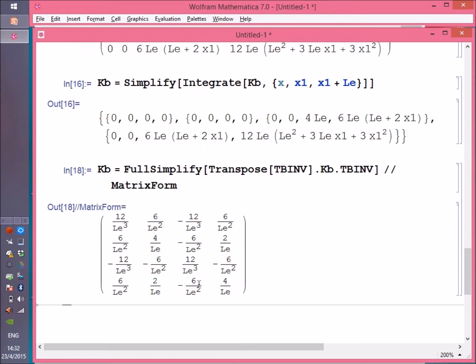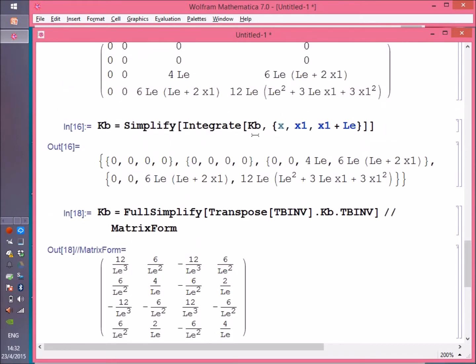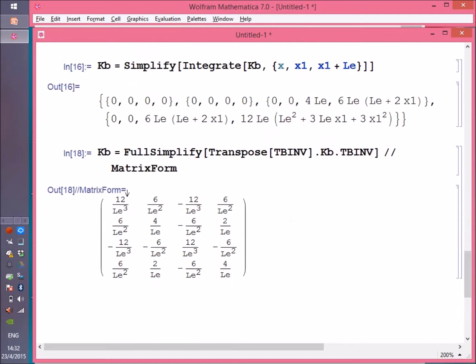So all I need to do is add an EI outside this matrix. If it's a constant, of course—if it's not constant, then it should have been included in the integration at this step. And you can see I'm having here all the terms, the 4x4 matrix is there. It's a symmetric matrix, and this is the matrix you're going to see in any finite element textbooks that talk about beams.